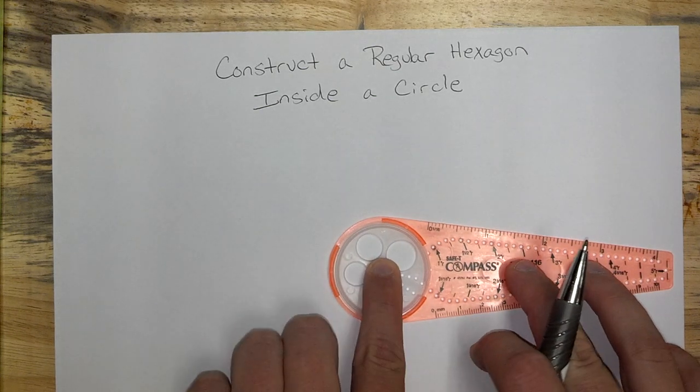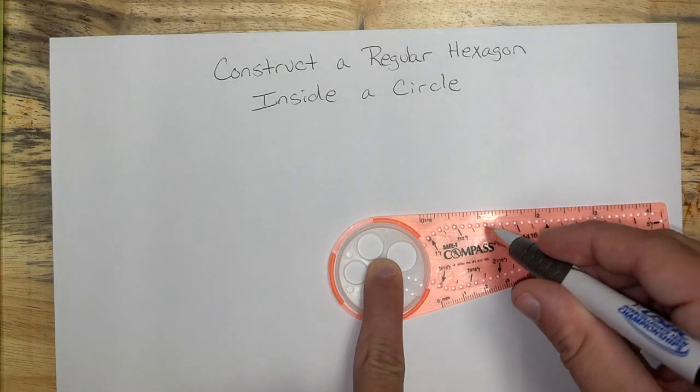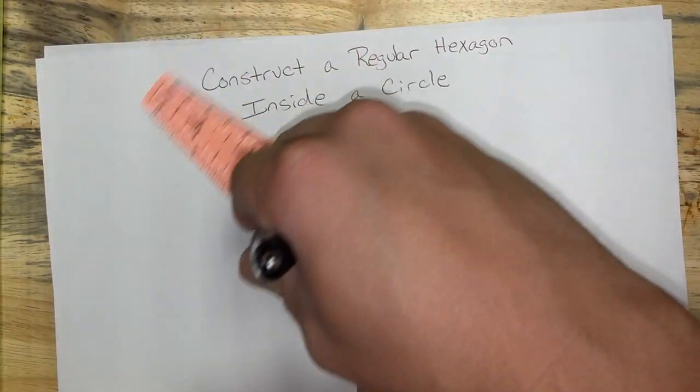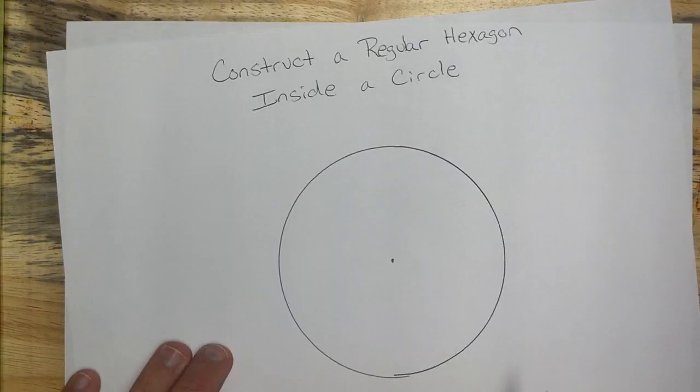Make it decent-sized. I'm going to come out here and make mine 2-inch radius. So using that 2-inch hole, I'm going to go around all the way and create a circle.